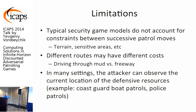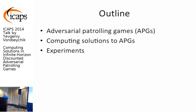In many settings, the attacker can observe the current location of defensive resources, because defenses are very visible. Examples include Coast Guard boat patrols and police patrol cars. We address these limitations by creating a model called adversarial patrolling games (APGs), which account for intelligent attacker response.